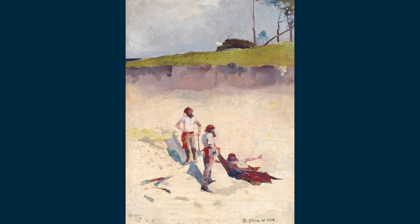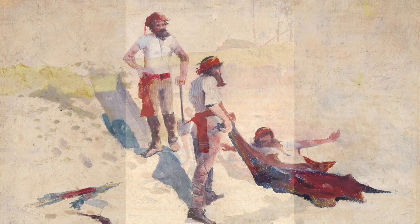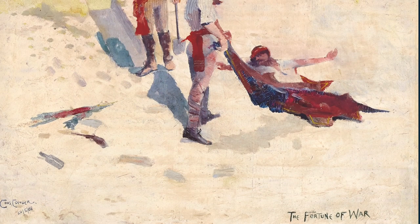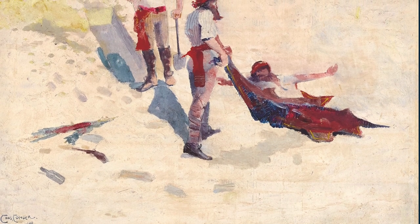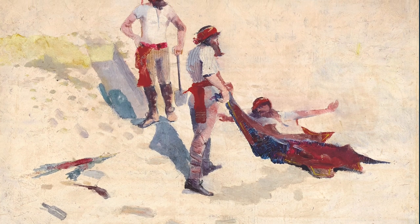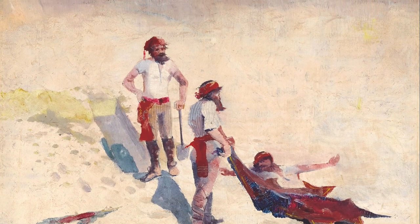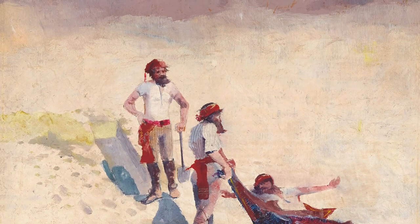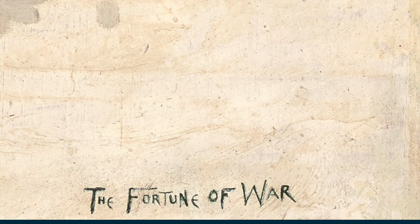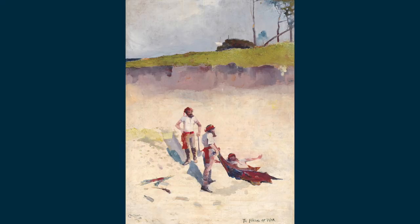The Fortunes of War is actually quite an unusual painting for Conder in this period, in 1888, at the time when he was producing his best paintings. This unusual work possibly depicts one of the earliest encounters between Aborigines and white colonialists. The painting does represent a curious kind of ambiguity. The title is written clearly lower right — The Fortune of War — and what that means, we don't know. It's possibly a reference to this encounter between Aborigines and white people.